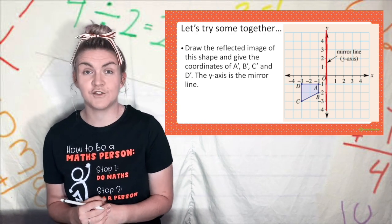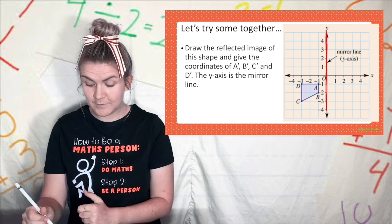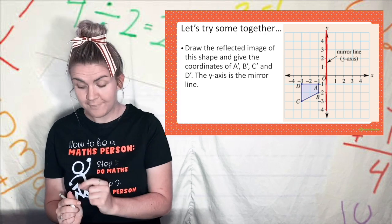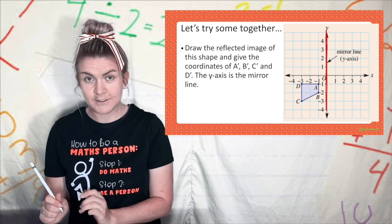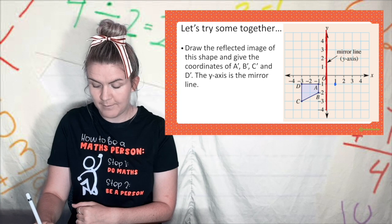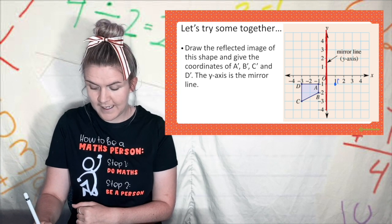Now I'm going to reflect each point individually. So first I'm going to look at a and I'm going to say how far away is it from the mirror line and that's one and then I'm going to count one on the other side of the mirror line and plot my point and that is a prime.